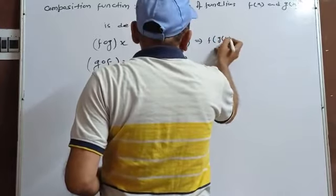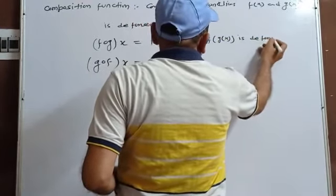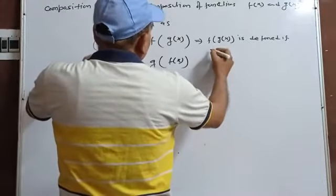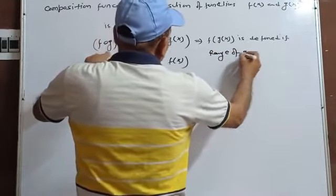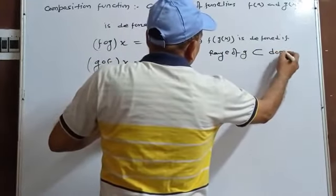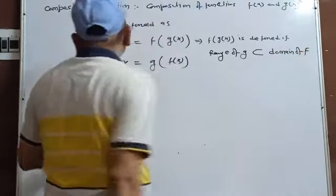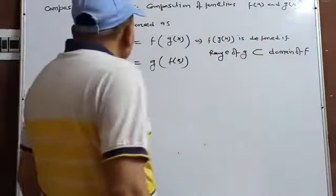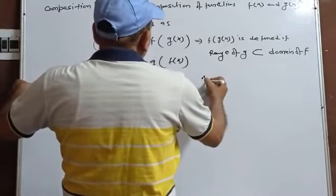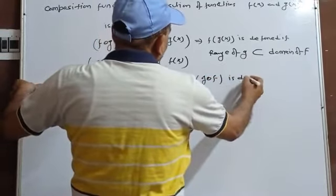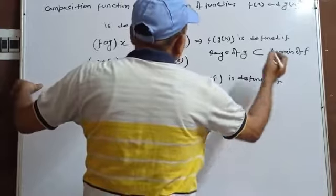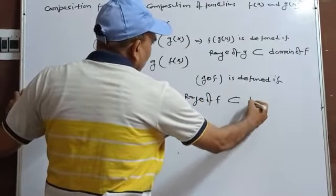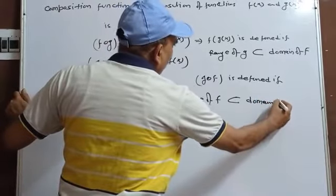fog(x) is defined if the range of g is a subset of the domain of f. Similarly, gof is defined if the range of f is a subset of the domain of g.